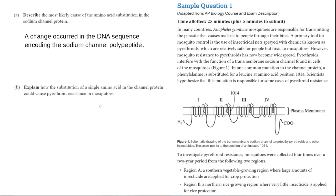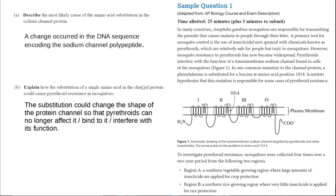For Part B, we're going to explain how the substitution of a single amino acid in the channel protein could cause pyrethroid resistance in mosquitoes. We have to be specific in understanding what changes in the amino acid sequence do to a given protein. The sequence is important, but it's really the three-dimensional structure of a protein that impacts its function. We have to link that amino acid substitution to the tertiary structure of the protein. The substitution could change the shape of the protein channel so that pyrethroids can no longer bind to it or interfere with it, so the channel no longer functions properly — and that's why the mosquitoes would therefore be resistant.